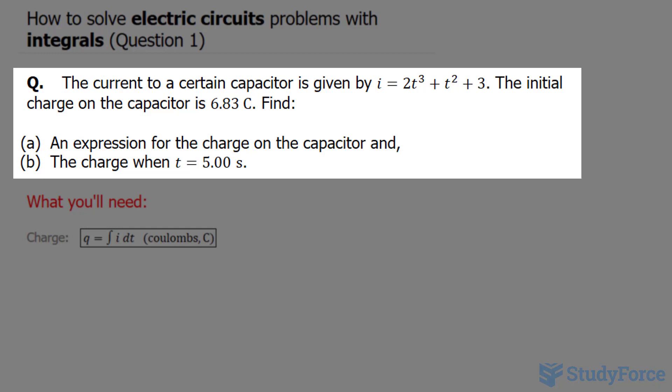The initial charge on the capacitor is 6.83 Coulombs. We are expected to find the expression for the charge on the capacitor and the charge when t is 5 seconds.